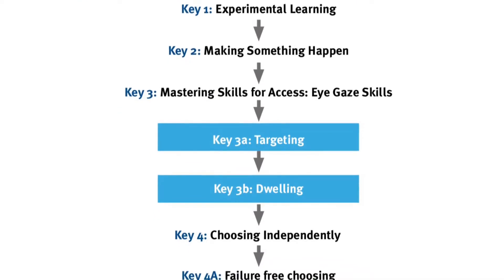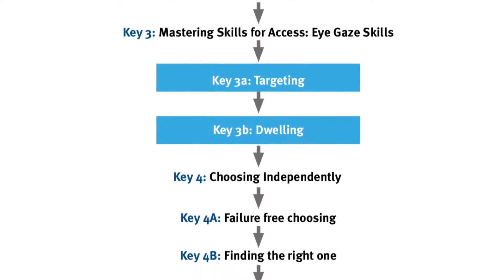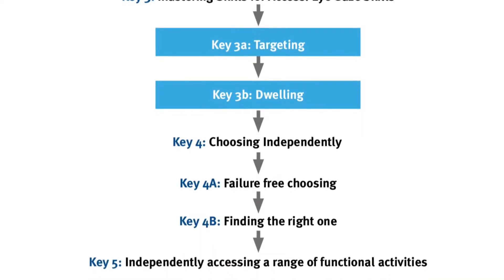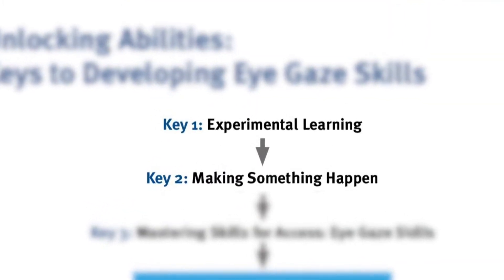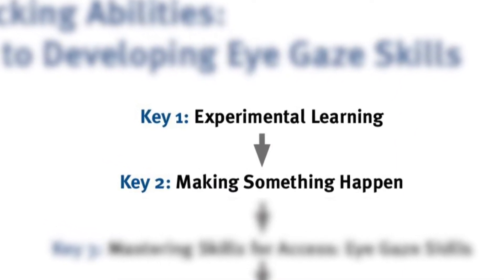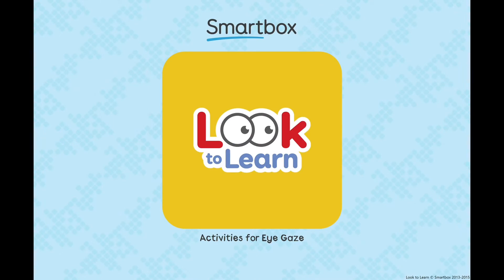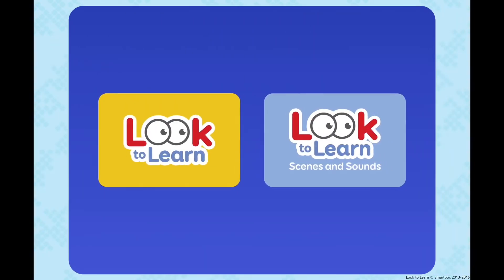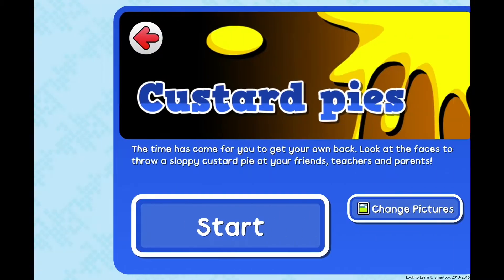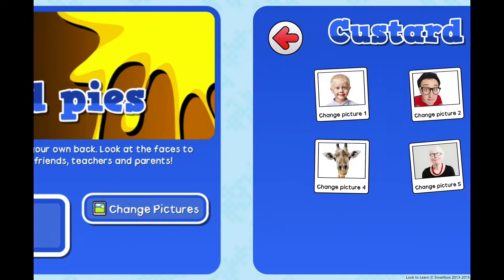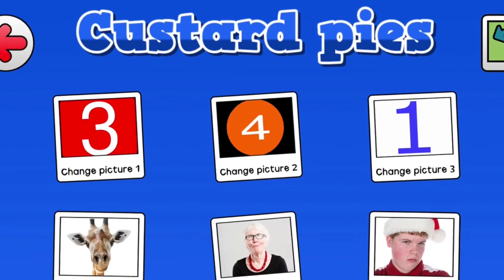In this video we have used the Unlocking Abilities key levels to break down the different eye gaze software that can be used to complete maths activities. Key 1 experimental learning and Key 2 making something happen: Look2Learn has a range of games suited to these early key levels. The activities can be customised with personalised images to provide students with the opportunity to experience numbers. For example, you could change the images in Custard Pies to numbers.